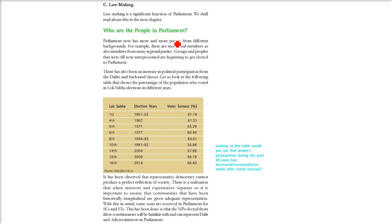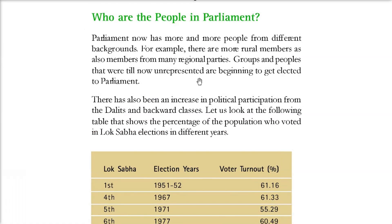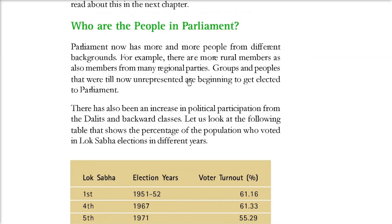The next thing is law making. The main idea is that parliament makes the law - it is the law-making authority. Who are the people in parliament? They can come from anywhere. MPs come from different backgrounds, mainly related to some parties, but there are more rural members as well as members from many regional parties.